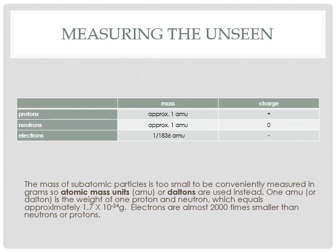One AMU is roughly 1.7 times 10 to the negative 24th grams — a number that is almost incomprehensibly small. To put it into perspective: think of the weight of a single small feather compared to the weight of the entire Earth, including all the mountains, all the seas, all the rocks, the entire Earth's core. The mass of that compared to the mass of a single feather is roughly the same as the difference in scale between the mass of a feather and the mass of one AMU. It's an enormously small number.